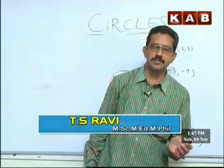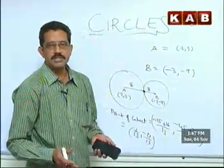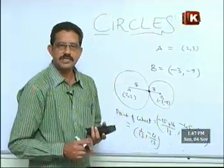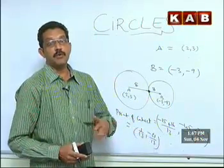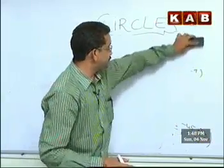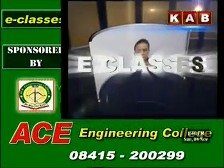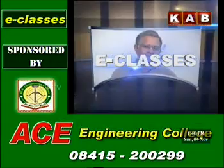There are two types of questions in this topic: one is finding the equation of a circle, and the other is common tangents. We proved that the circles are touching each other externally, and we found the point of contact. Now, how to find the equations of the common tangents — we will take that up in the next question. Keep watching KB Television.